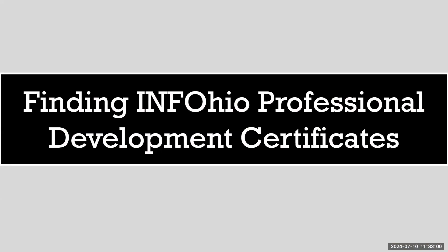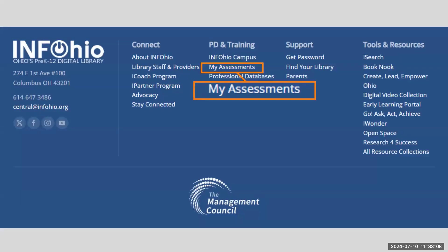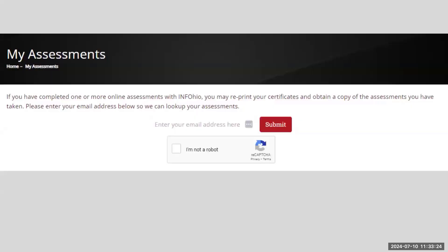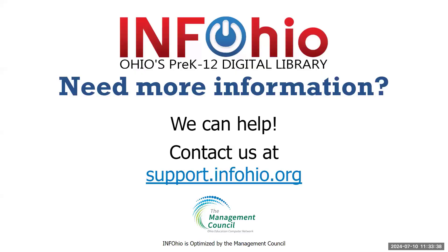If you have lost or wish to reprint any certificates earned through InfoOhio, you can follow these next steps. Go to our homepage at www.infohio.org and scroll down to the very bottom of the page. Under PD and Training, you can click on My Assessments. You will enter your email address and submit. A list of classes completed along with certificates will come up with the option to view or download the certificate. Thank you and please reach out if you need further assistance.